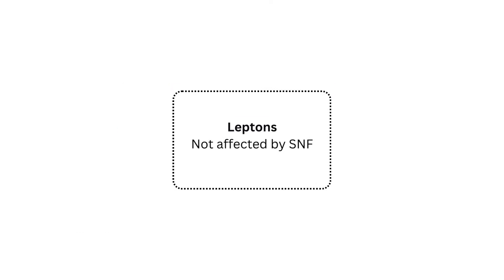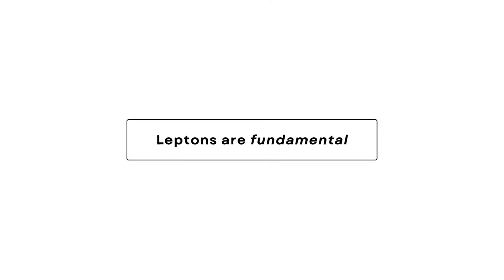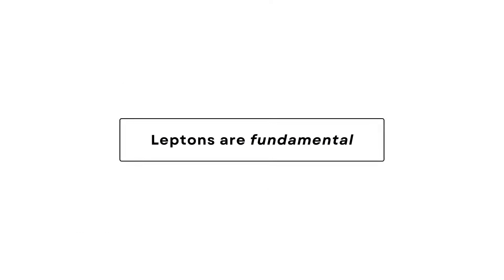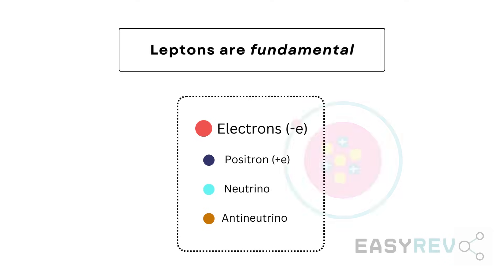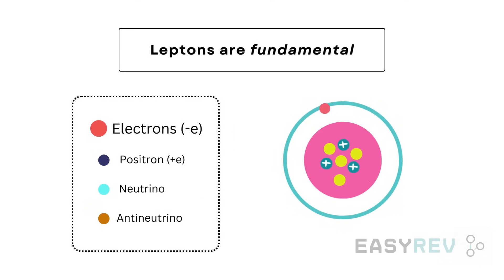Of the two, leptons are fundamental because they cannot be broken down further. We have the following four leptons. Finding the electron in this category shouldn't be a surprise to us. Why? Because electrons reside outside of the nucleus and so they are not capable of even feeling the strong nuclear force.